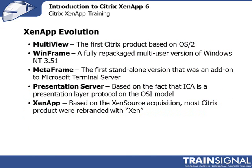Over the years, the Citrix marketing department has had a blast with name changes. The very first product based on OS/2 was Multiview. The very first complete Citrix product based on the Windows platform was called WinFrame. WinFrame was its own fully integrated, fully repackaged product that went to market outside of Microsoft — you would buy WinFrame pre-installed; it was a Citrix product and you didn't have to install it on top of anything, as is the case today.